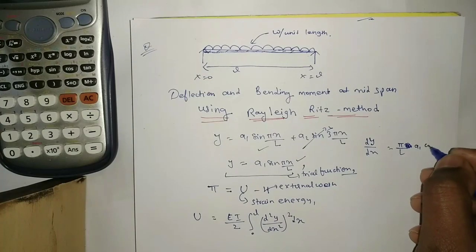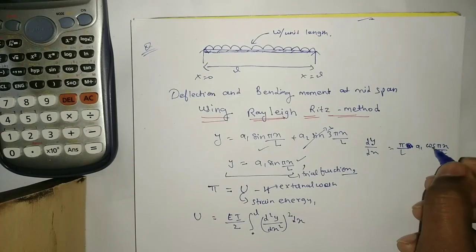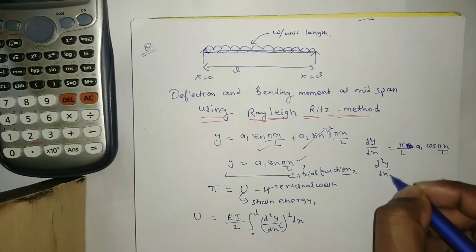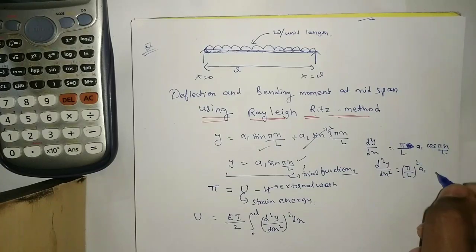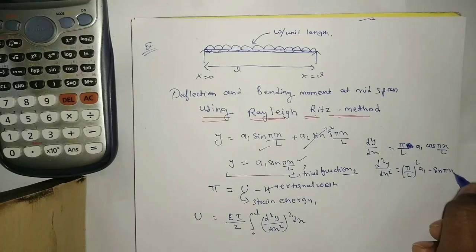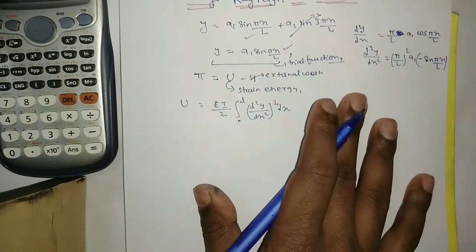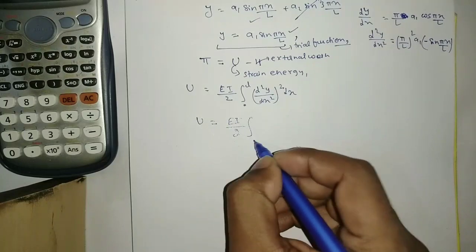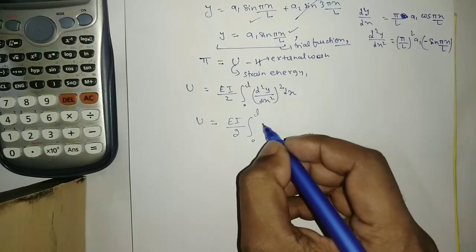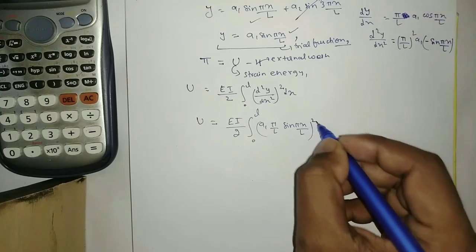Taking the derivative: dy/dx = a1·(π/L)·cos(πx/L). Then the second derivative is: d²y/dx² = −a1·(π/L)²·sin(πx/L). We now square this and substitute into the strain energy integral: U = (EI/2)·∫₀ᴸ [a1·(π/L)²·sin(πx/L)]² dx.